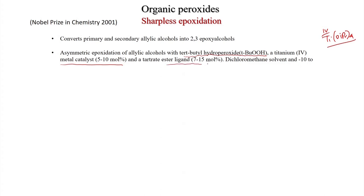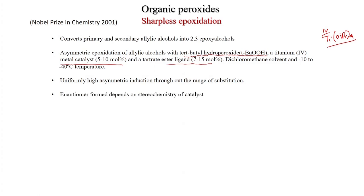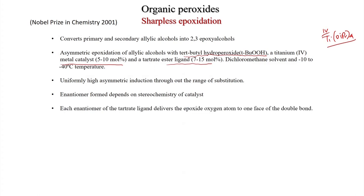Dichloromethane solvent is used at −10 to −40 °C. Uniformly high asymmetric induction is possible throughout the range of substitution. The enantiomer formed depends on the stereochemistry of the catalyst — if you use D-tartrate versus L-tartrate, you get the opposite stereochemistry of the product. Each enantiomer of the tartrate ligand delivers the epoxide oxygen to one face of the double bond — facial attack is the key concept.